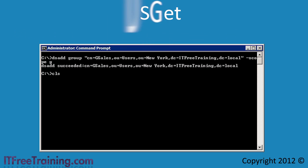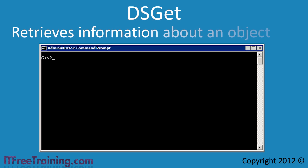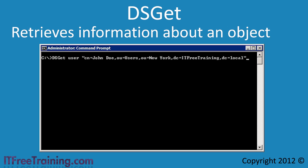The next command is dsget, which allows information about an object to be retrieved from Active Directory. I will use the parameter 'user' to get information about a user. The distinguished name needs to be added to indicate which object information will be retrieved for. Following that, I enter the parameters for the information I want to retrieve — in this case '-fn', '-ln', and '-email' to retrieve the first name, last name, and email address. Once the command runs, the information is displayed in columns with titles above indicating which type of data it is.